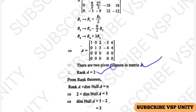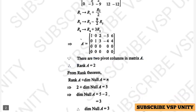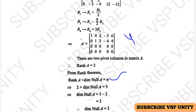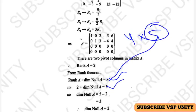Hence rank of A will become 2. Now using rank nullity theorem: rank A plus dimension of null A equals N. This matrix is 4 by 5, so N is equal to 5. Rank A is 2, so 2 plus dimension of null A equals 5. If you bring 2 to this side, then it will be 5 minus 2, which is 3. So dimension of null space of A will become 3.